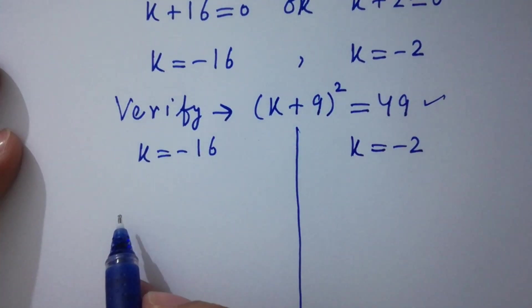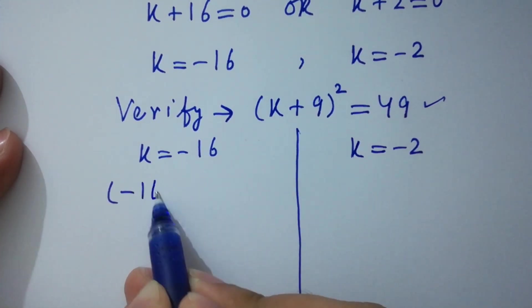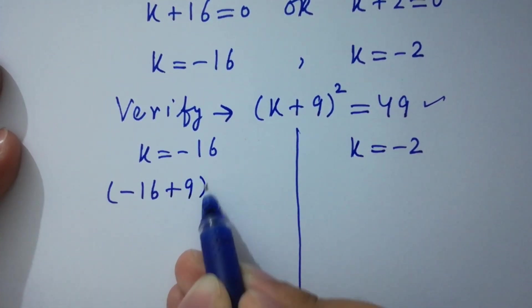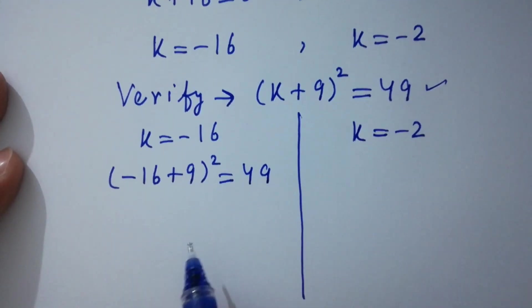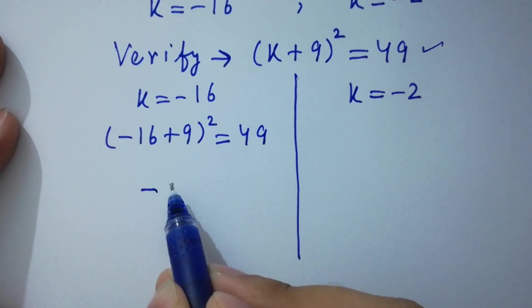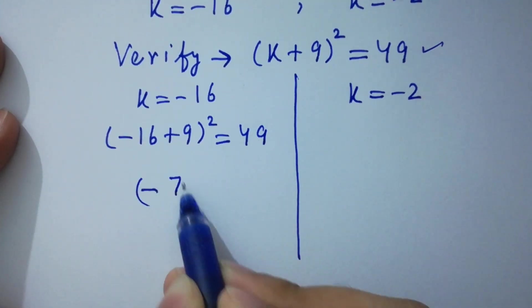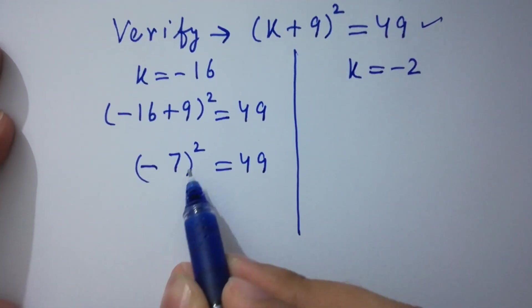We have here (-16 + 9)² = 49. Simplify this. We have here -16 + 9, we have here -7 whole square equal to 49. This is true.